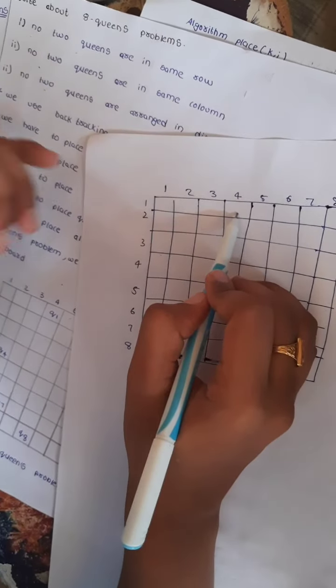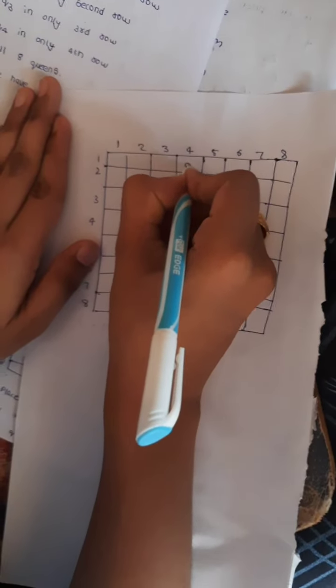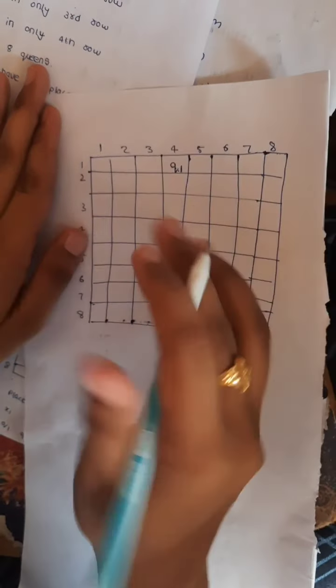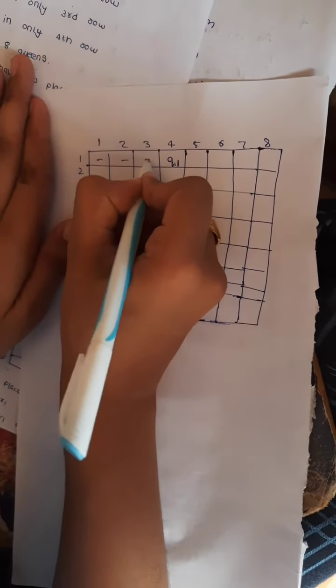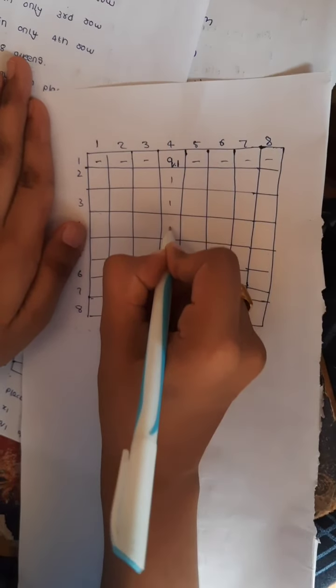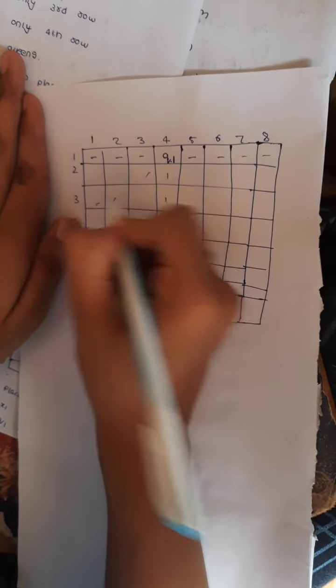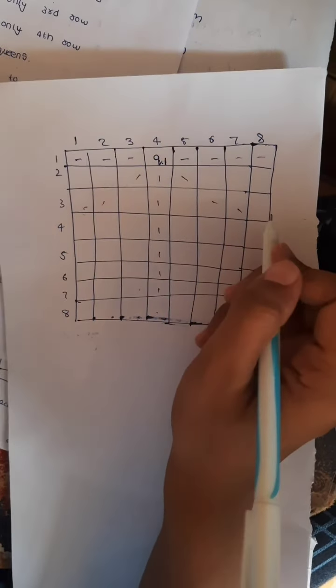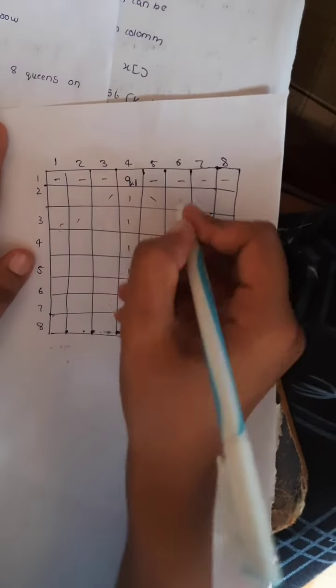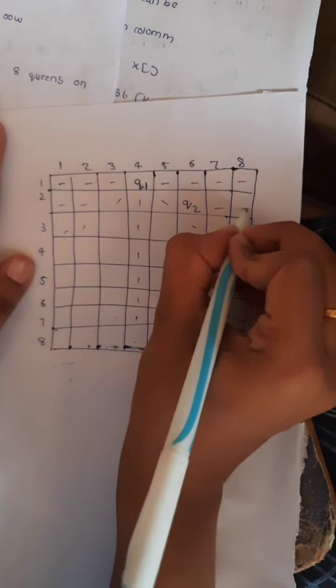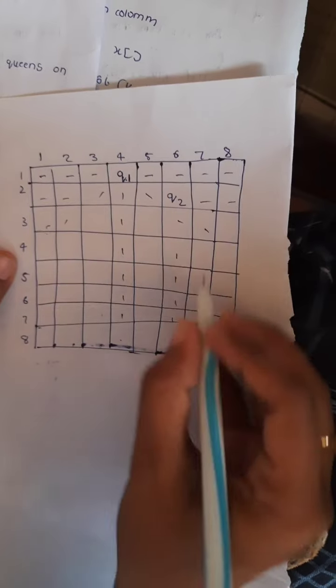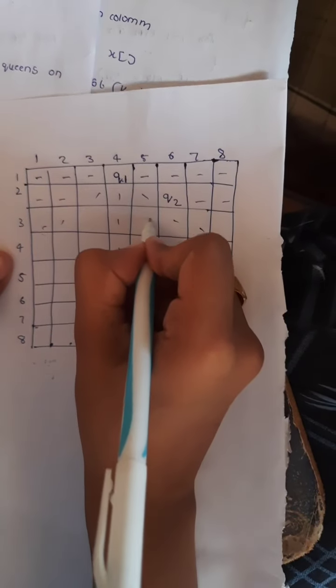Now we are going to place the Queens according to the 3 rules: we cannot place the same Queen in the same row, same column, or diagonally. Queen 1 is placed only in the 1st row. I am placing Queen 1 in the 1st row. We are not going to place the other Queens in those boxes, those column boxes, and diagonal-wise boxes. Now we are going to place Queen 2 in the 2nd row. I am placing Queen 2, and we are not going to place any Queen in those diagonal-wise boxes.